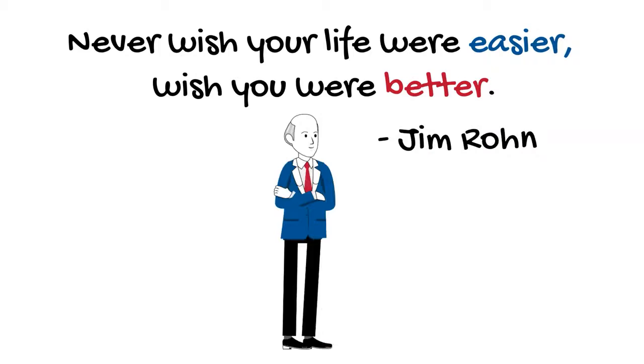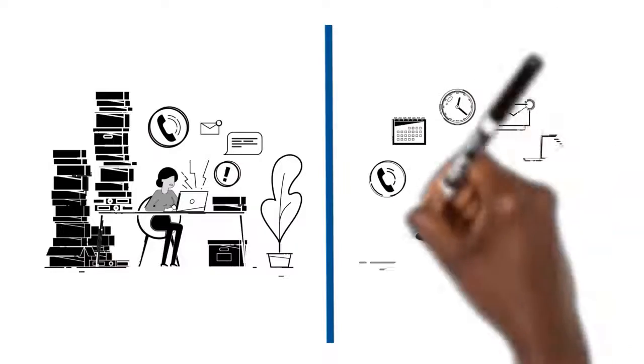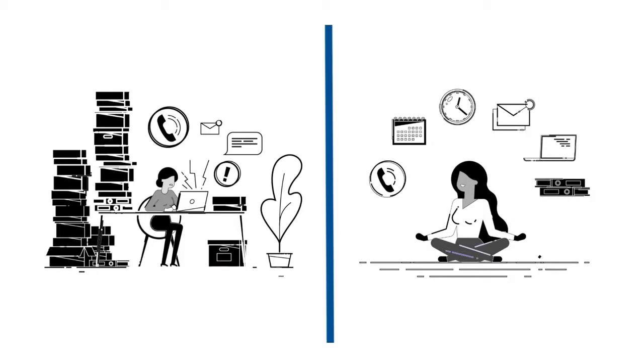That was Jim Rohn. And when Mr. Rohn said that I worked out, if I work harder on me than I do on my job, then I'm using the formula to perfection.